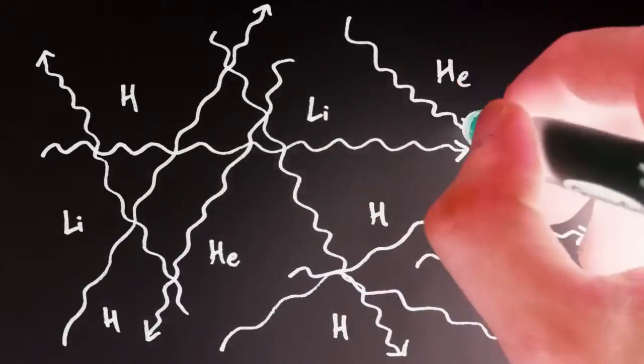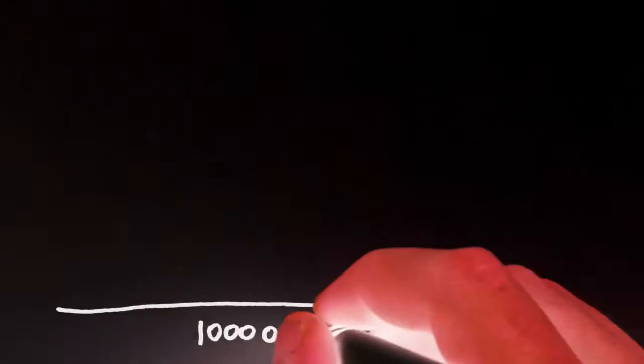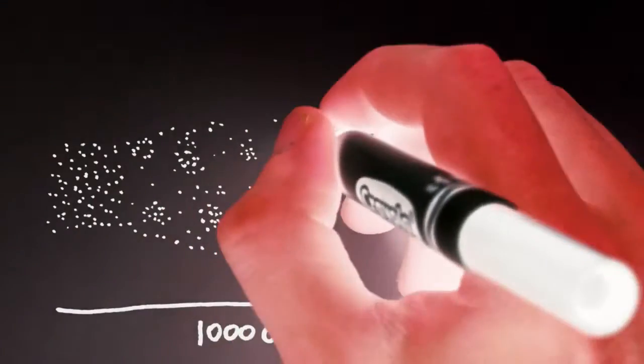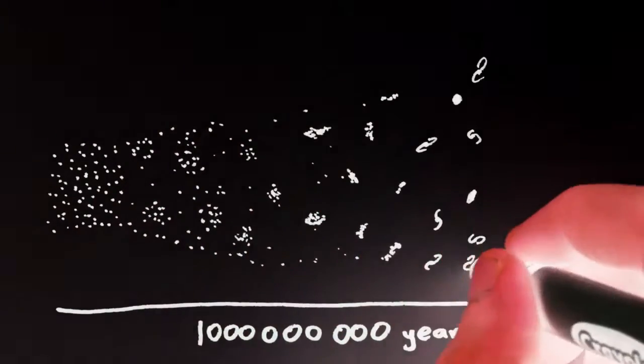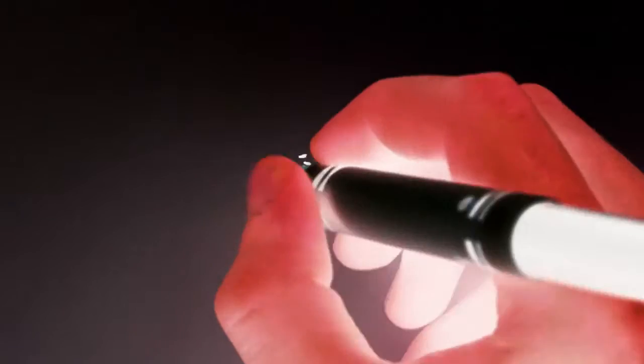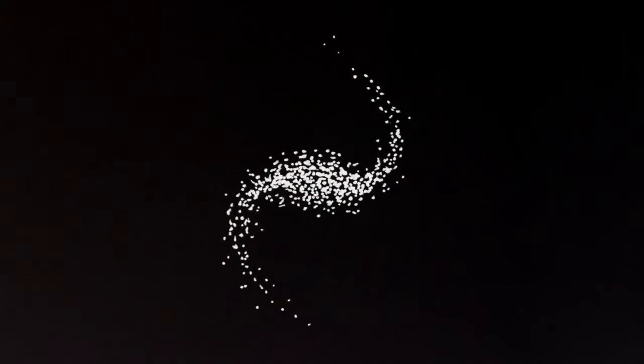And these free-flying photons are visible today as the cosmic microwave background. Over the first billion years, the universe continued to expand and cool as matter gravitated into these massive concentrations we call galaxies. Between 50 and 100 billion of them formed, each containing hundreds of billions of stars that undergo thermonuclear fusion in their cores.